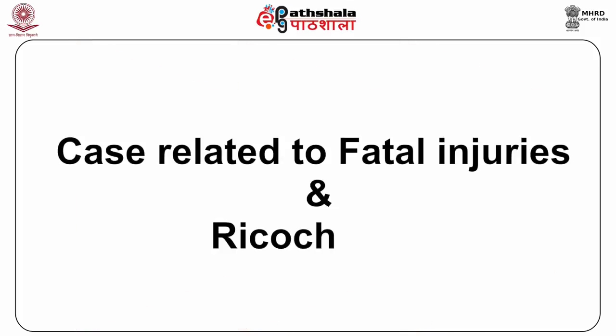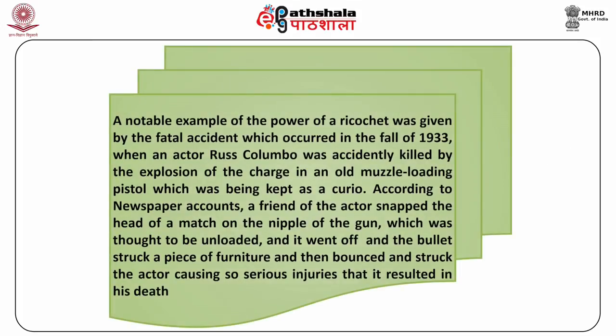A notable example of the power of a ricochet was the fatal accident which occurred in the fall of 1933 when actor Russ Colombo was accidentally killed by the explosion of the charge in an old muzzle-loading pistol being kept as a curio. According to newspaper accounts, a friend snapped the head of a match on the nipple of the gun, which was thought to be unloaded. It went off, the bullet struck a piece of furniture, then bounced and struck the actor, causing injuries so serious that it resulted in his death.